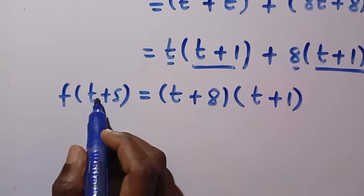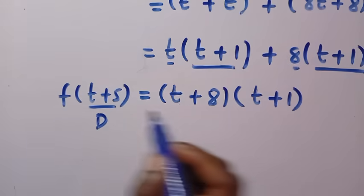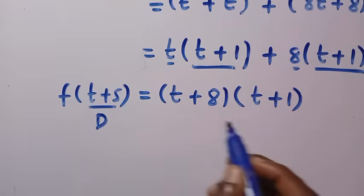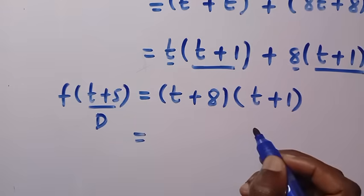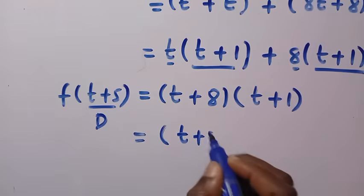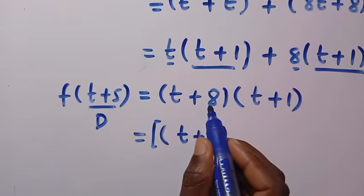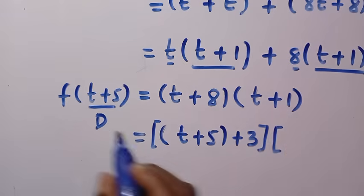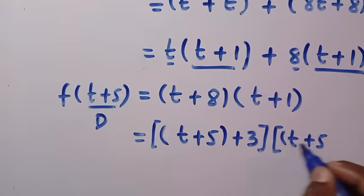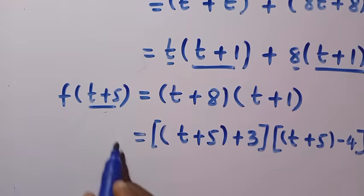Now, what we need is to match the argument of the function to t+5. We have t+8 and t+1, and neither looks like t+5. We need to manipulate them. For t+8, we rewrite it as (t+5)+3. For t+1, we rewrite it as (t+5) minus 4.